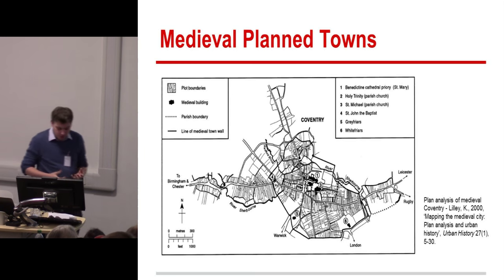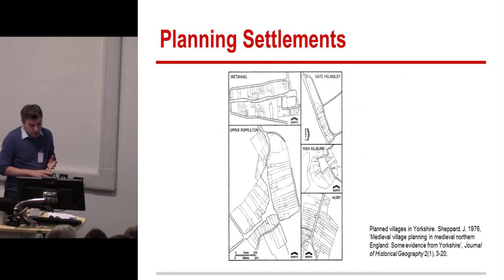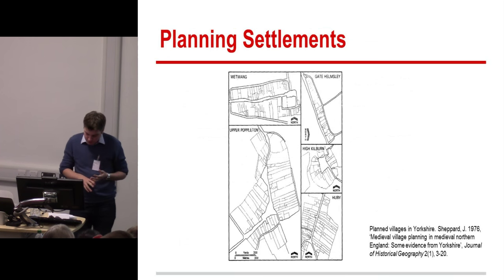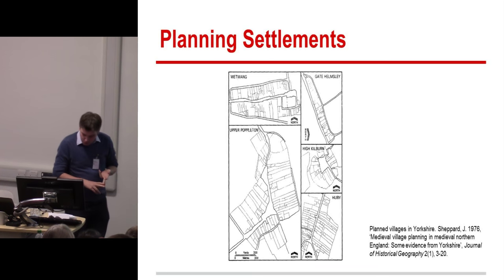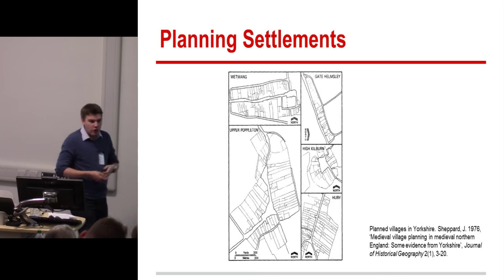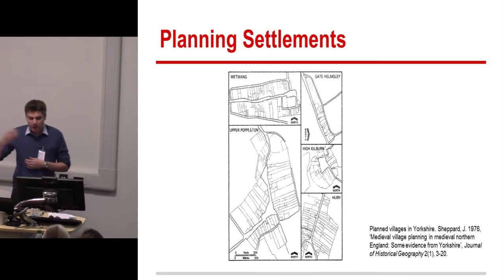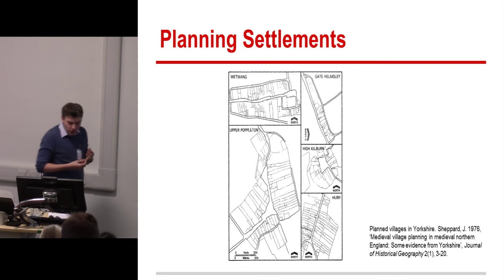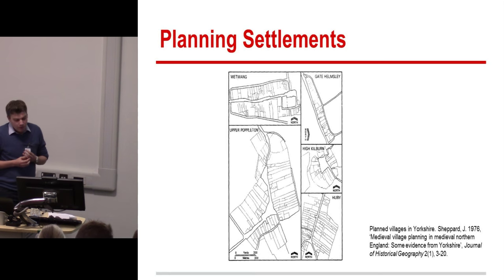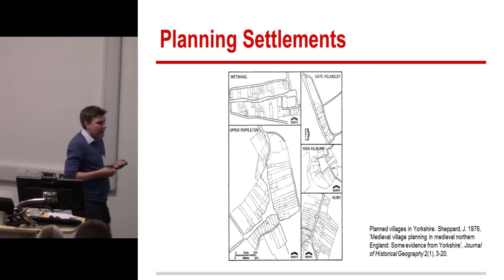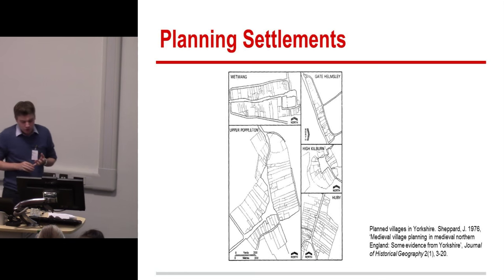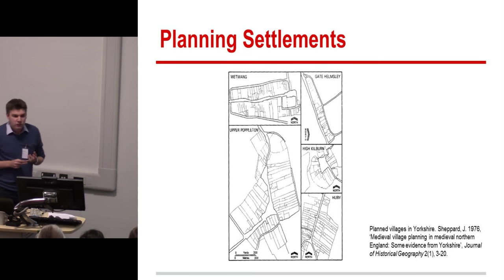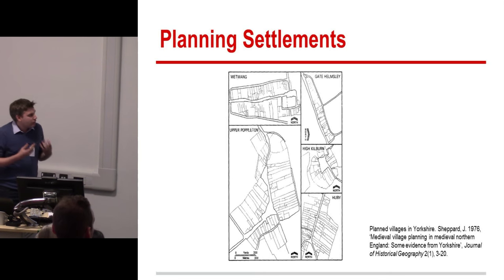Planned versus organic is something of a false dichotomy. Towns vary for a wide variety of reasons: was it a port, a market, on a major route way? Was it founded on a virgin site or developed out of an existing settlement? Who was the lord, and were they ecclesiastical or lay? This variability underpins the difficulty which still exists in scholarship in defining what a town is. The principal best definition, put forward by Chris Dyer, is that it's a place with a primarily non-agrarian economy—which is so vague as to not be particularly helpful.